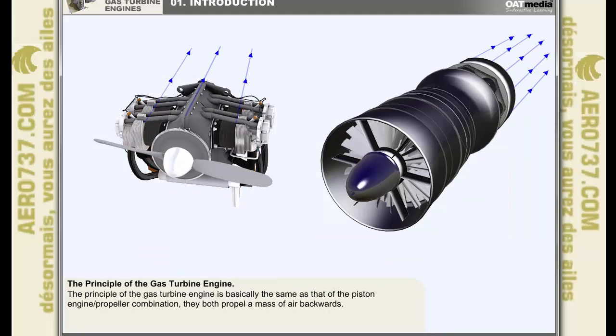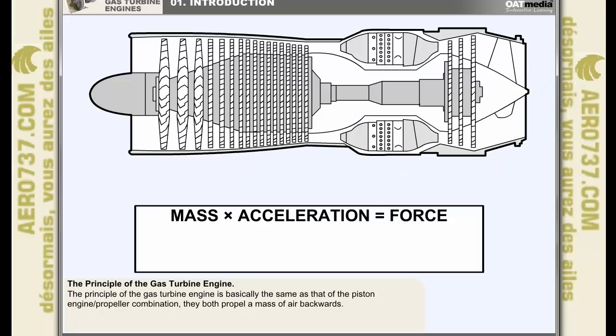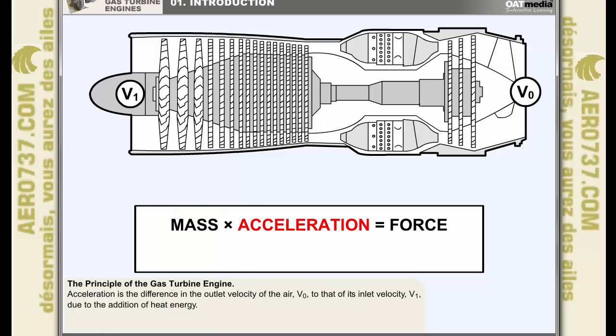The principle of the gas turbine engine is basically the same as that of the piston engine propeller combination. They both propel mass of air backwards. Mass times acceleration equals force. In a gas turbine engine, the mass, m, mentioned in the equation is the air delivered by the compressor. The acceleration in the equation is the difference in the outlet velocity of the air, V0, to that of its inlet velocity, V1, due to the addition of heat energy. Force equals mass times V0 minus V1, which equals thrust.